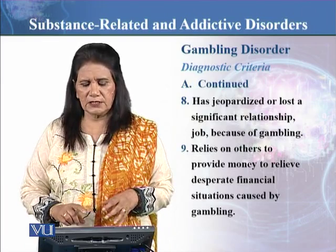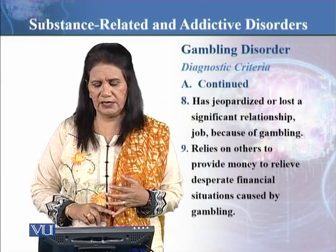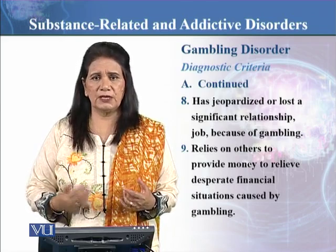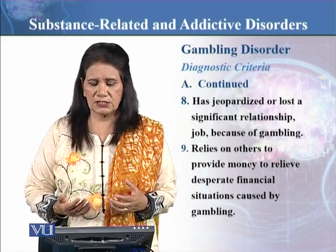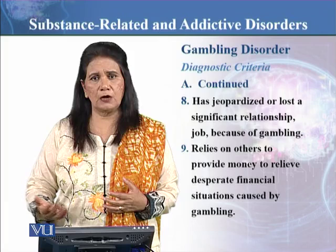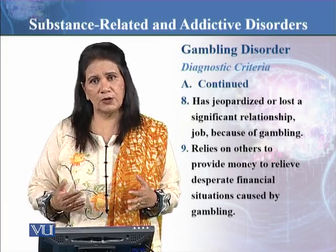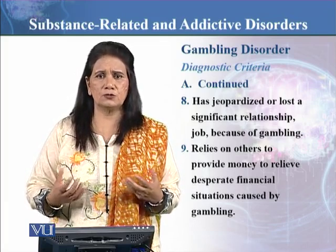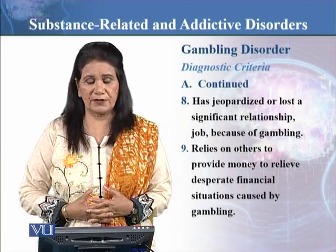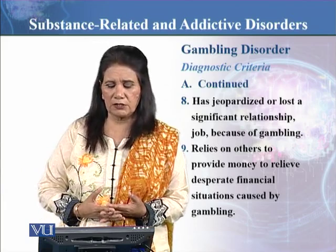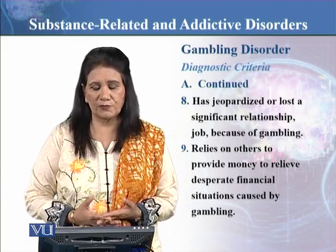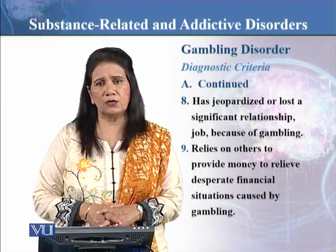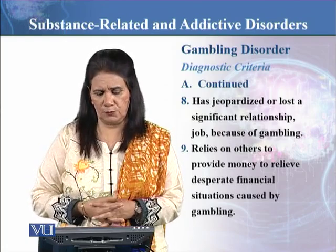The eighth symptom is that the person has jeopardized or lost a significant relationship or job because of gambling. Because money is involved — they may win sometimes but most probably they are losing too — the person is not pursuing his occupation. The criteria state that he is so involved in gambling behavior that it affects his occupational functioning and interpersonal relationships. He has lost jobs and relationships because of gambling.